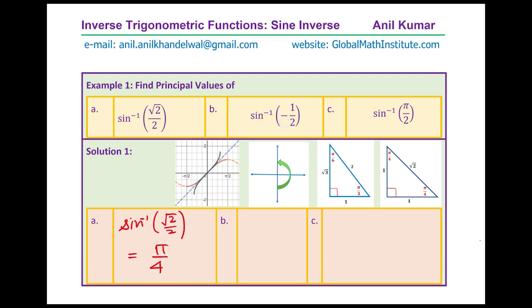For sine inverse of minus half: when we say minus half, we are looking for an angle in quadrant 4, going clockwise. Sine value is half for which angle? Looking at the pi by 3, pi by 6, pi by 2 special triangle, sine is half when the angle is pi by 6. Since we are in quadrant 4, the angle will be minus pi by 6. Therefore we get the answer as minus pi by 6.